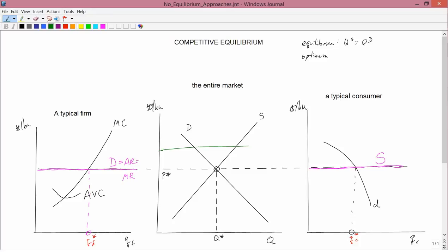Well, then there's excess quantity supplied because quantity supplied is here and quantity demanded is here. So there's too much stuff supplied. Inventory is building up on store shelves, so firms decide to lower the price so they can get rid of the stuff, and that puts a downward pressure on price.